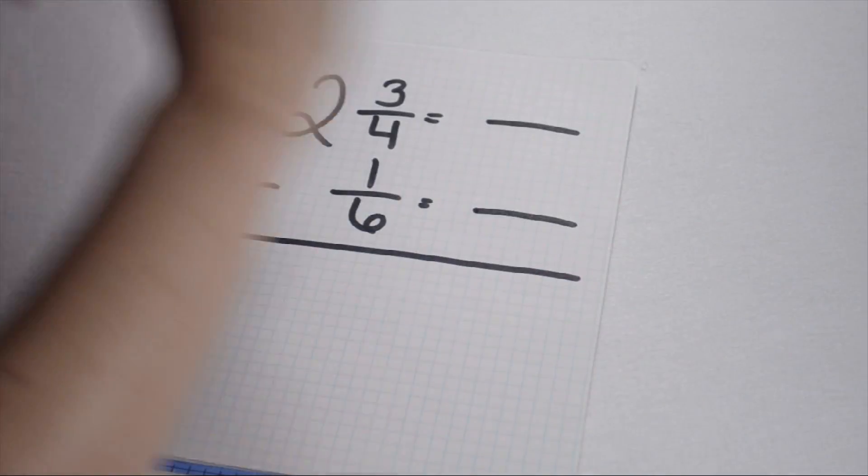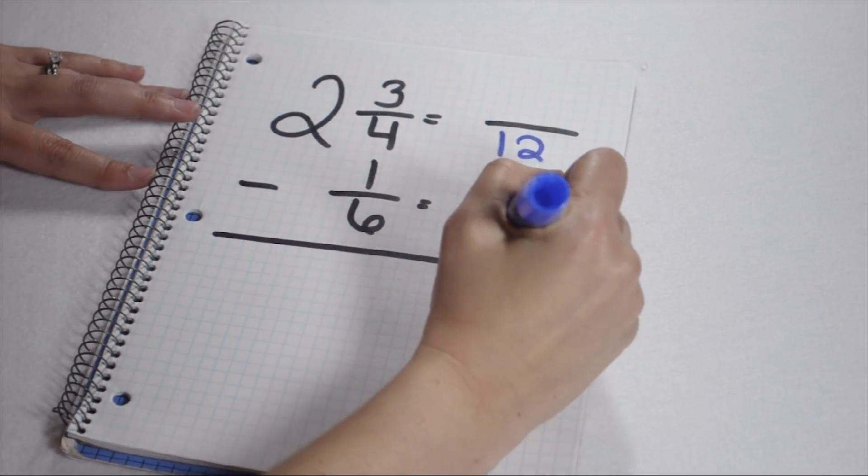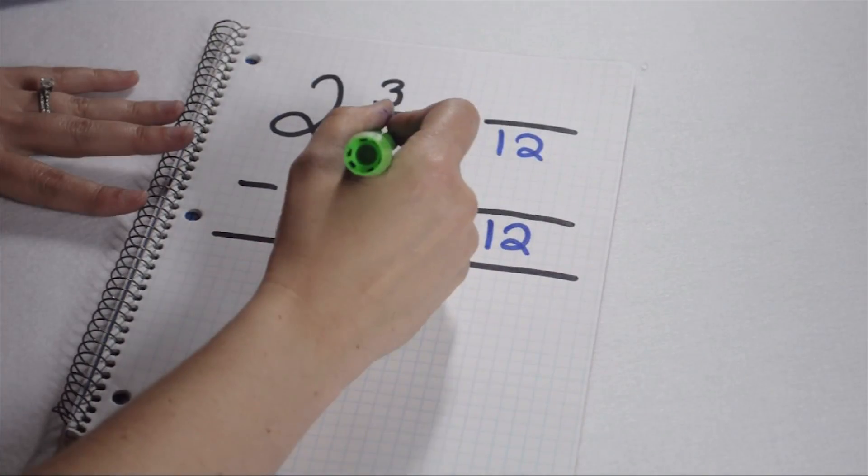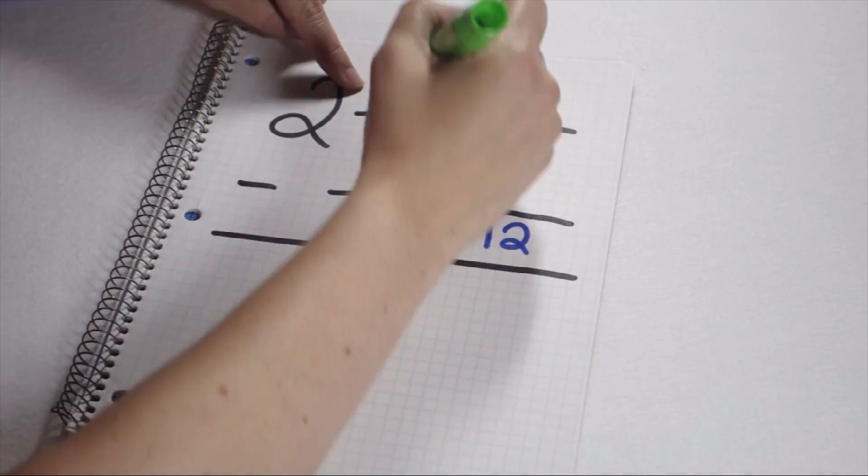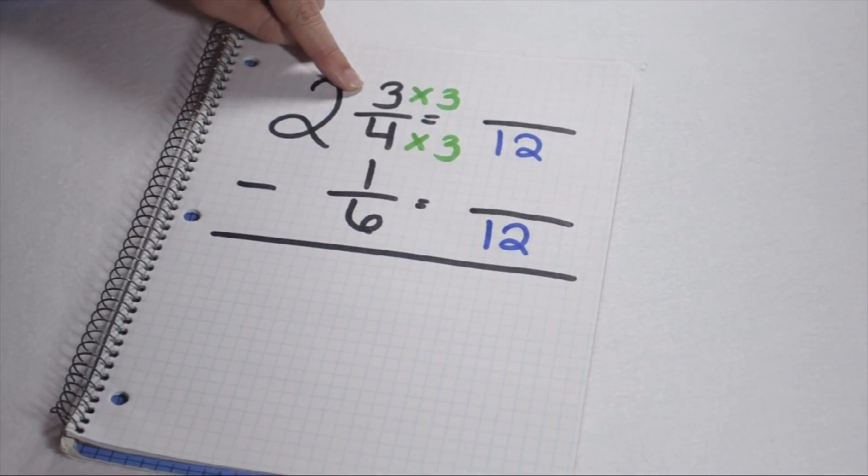To get from a denominator of 4 to a denominator of 12, I need to multiply by 3. Since I multiply my denominator by 3, I need to multiply my numerator by 3 as well. So 3 fourths is equivalent to 9 twelfths.